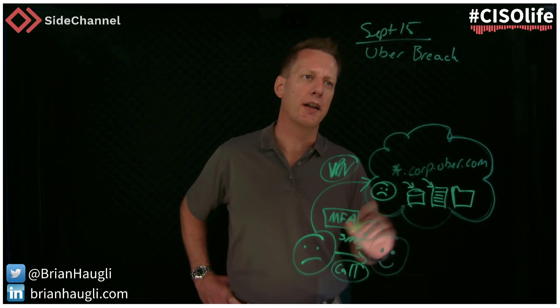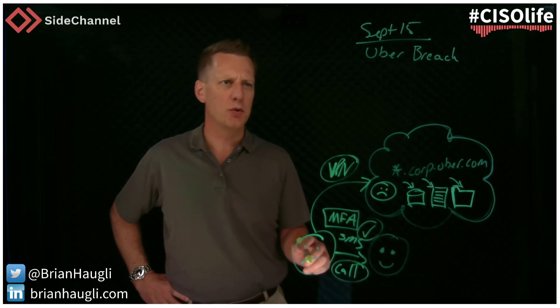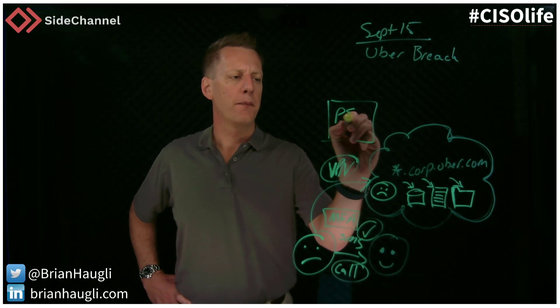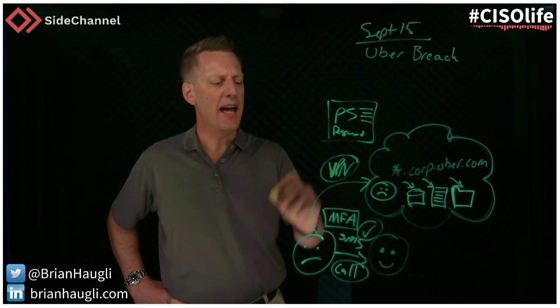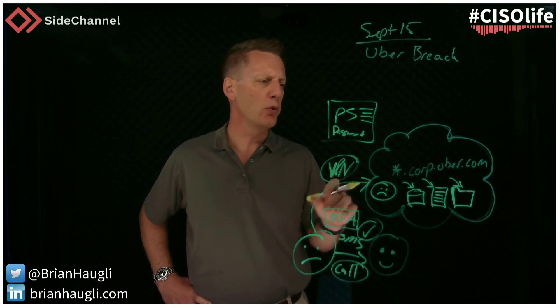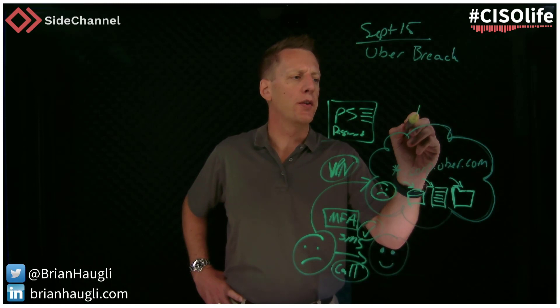Looking for information, what the attacker was able to come up with was a PowerShell script that had inside of it a hard-coded password. Inside this document, that then allowed the attacker to move and use this hard-coded password supposedly to access a major system within the Uber environment.